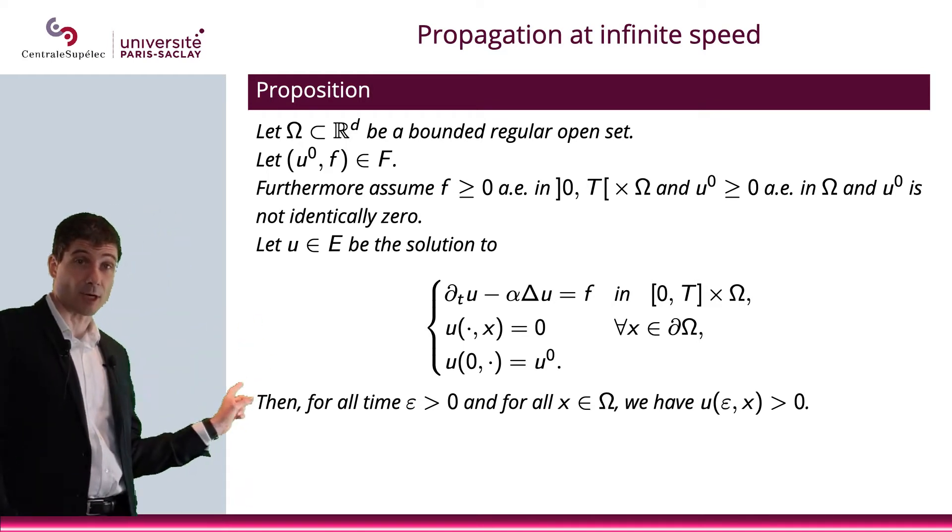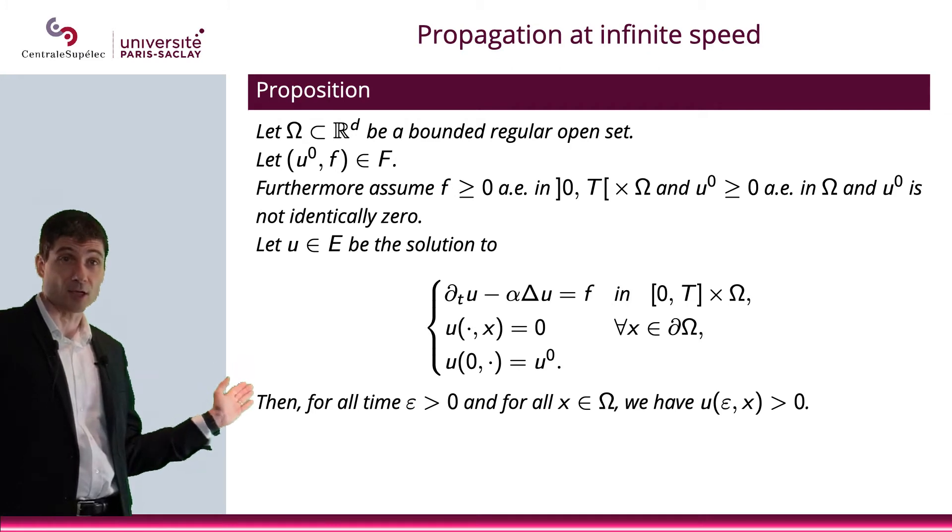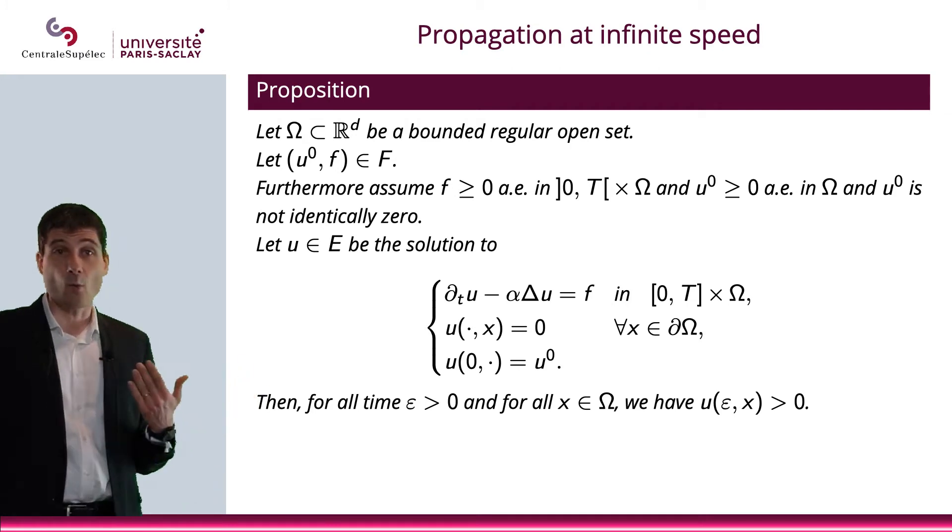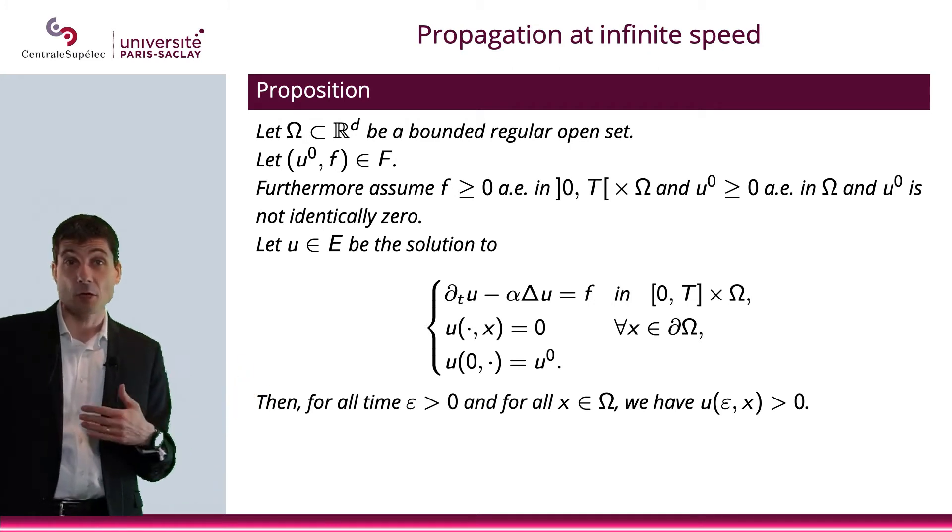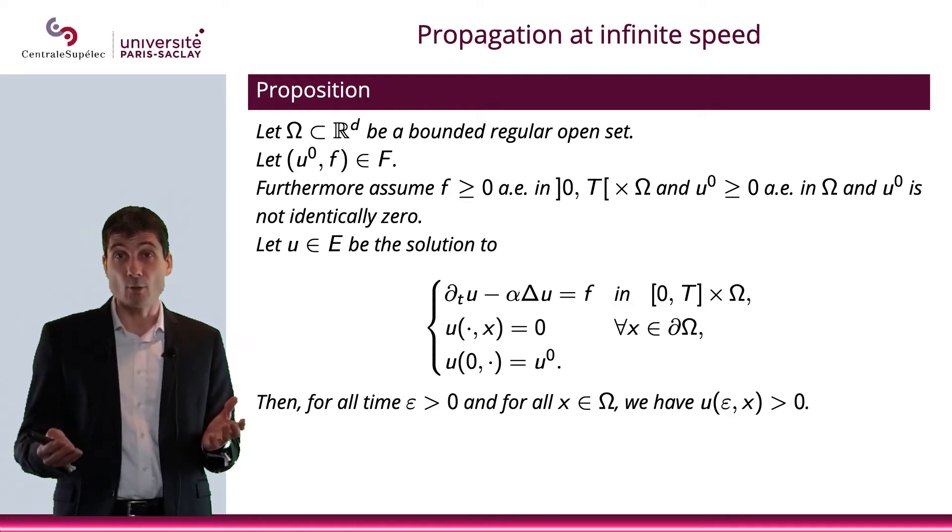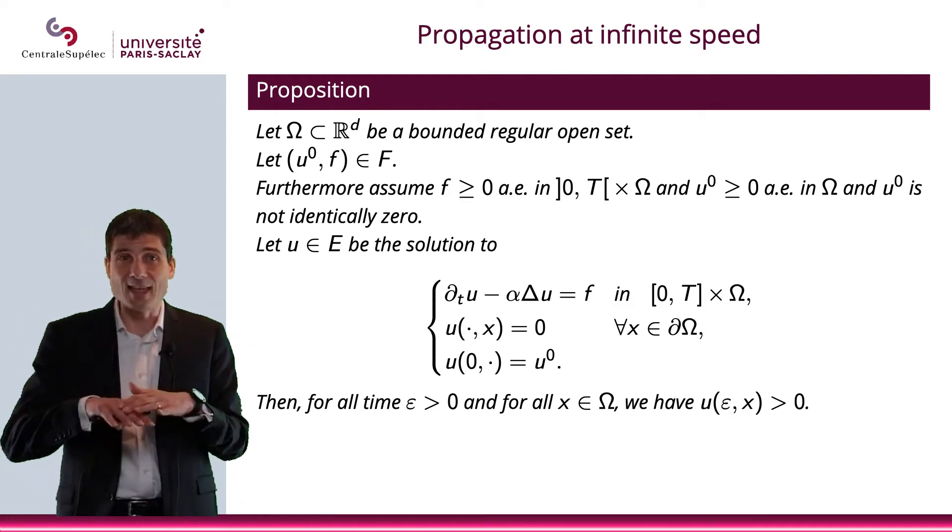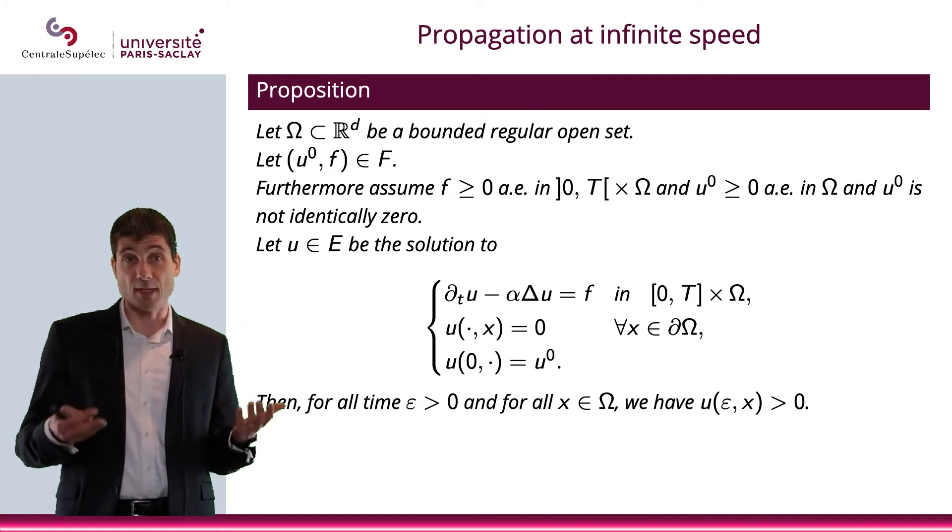While at t equals zero, as you could see from the initial condition, what we have is U^0, which could possibly be equal to zero—not identically equal to zero, but it could be equal to zero.